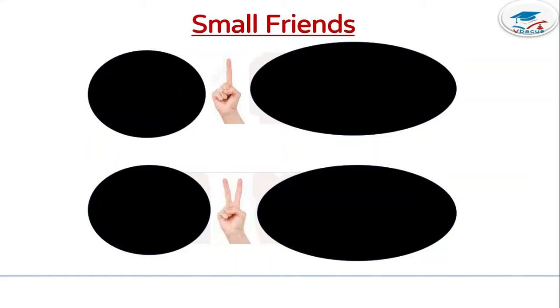How many fingers do you have in one hand? 5. How many is open? 1. How many fingers are closed? 4. So, 4 is a friend of 1. You can write it as 4, 1.